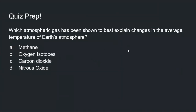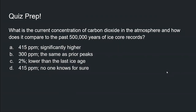Quick prep question: which atmospheric gas has been shown to best explain changes in the average temperature of Earth's atmosphere? The answer is carbon dioxide — CO2, answer C. And the current concentration of CO2 in the atmosphere is approximately 415 PPM, significantly higher than at any point in the past 500,000 years of ice core records — that's answer A. The planet is warming, we are causing it, and CO2 levels are much higher than before, primarily due to our activity.